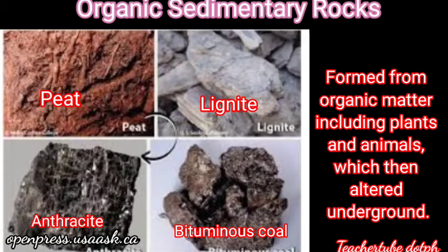Organic sedimentary rocks are formed from organic matter including plants and animals which are then altered underground. There are four examples: peat — a brown deposit formed by partial decomposition of vegetable matter; lignite — naturally compressed peat and the lowest rank of coal; anthracite — a hard variety of coal; and bituminous coal — coal with high volatile content that burns with a bright smoky flame.